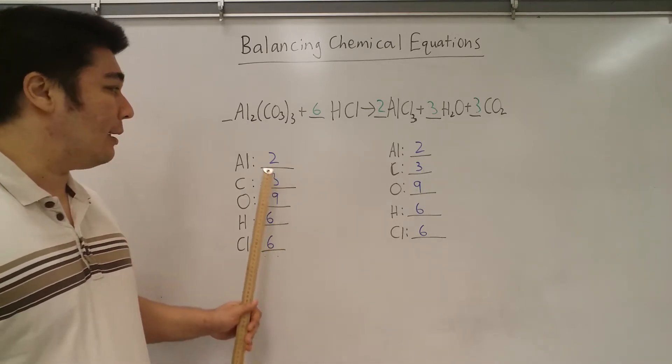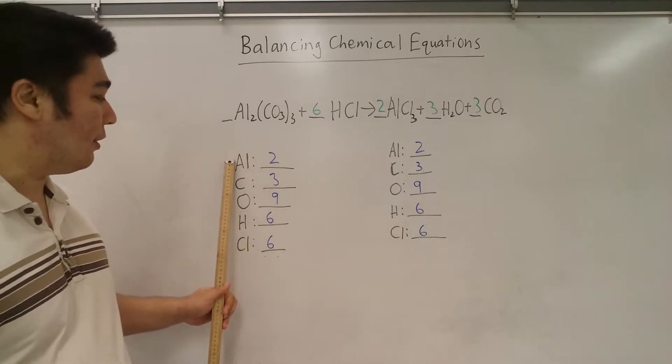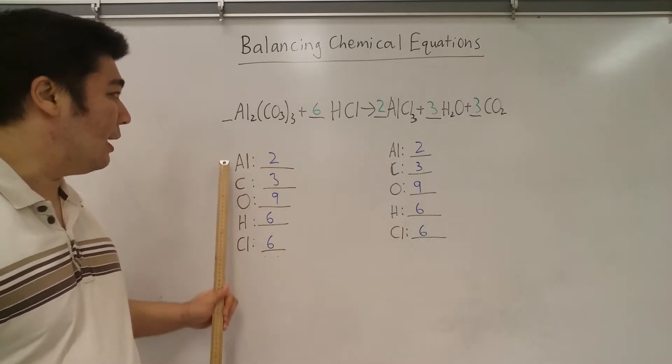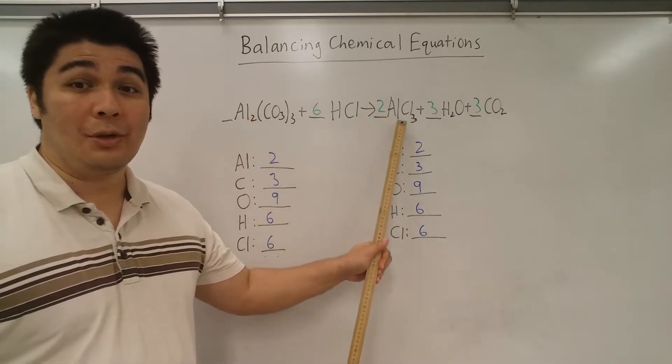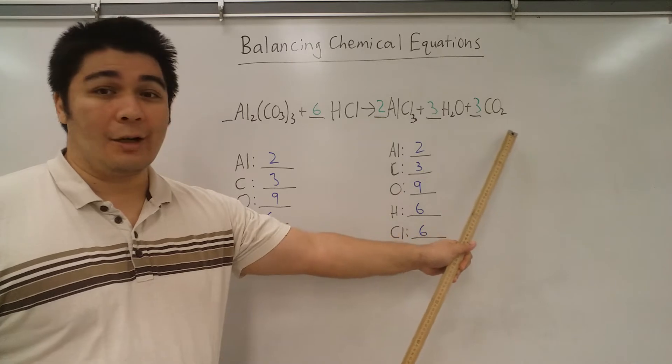The way that I start to balance the equations is I list out all the different chemicals. In this one it's aluminum carbonate plus hydrochloric acid gives you aluminum chloride plus water and carbon dioxide.